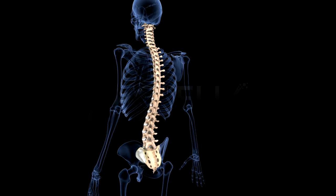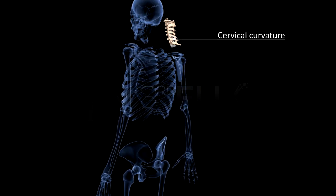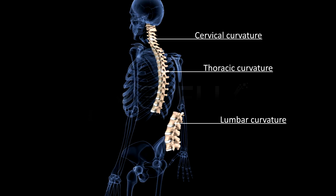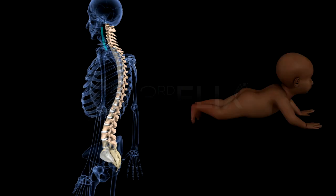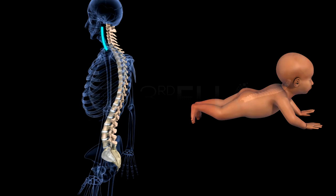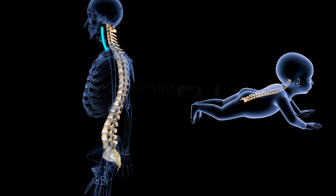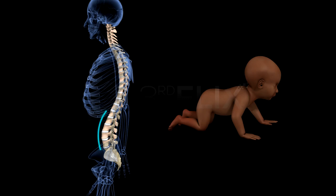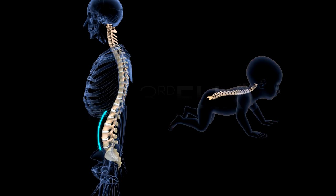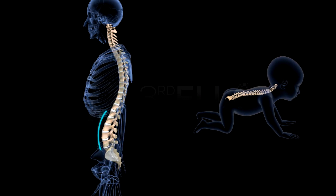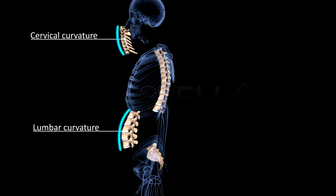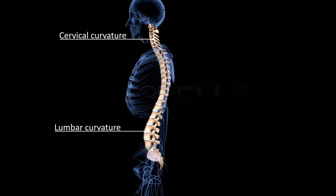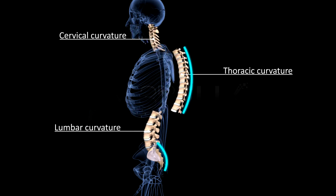The vertebral column has four curvatures: cervical, thoracic, lumbar, and sacral. The cervical curvature is developed when the infant starts raising his head, and the lumbar curvature is formed when he starts crawling. The cervical and lumbar curvatures are directed forwards, whereas the thoracic and sacral curvatures are directed backwards.